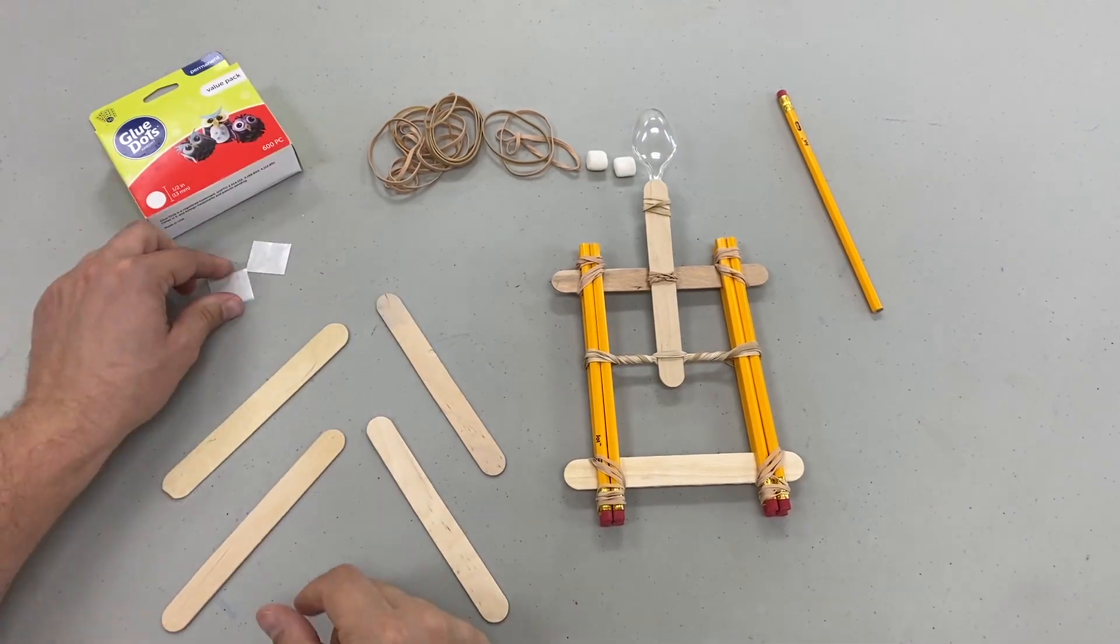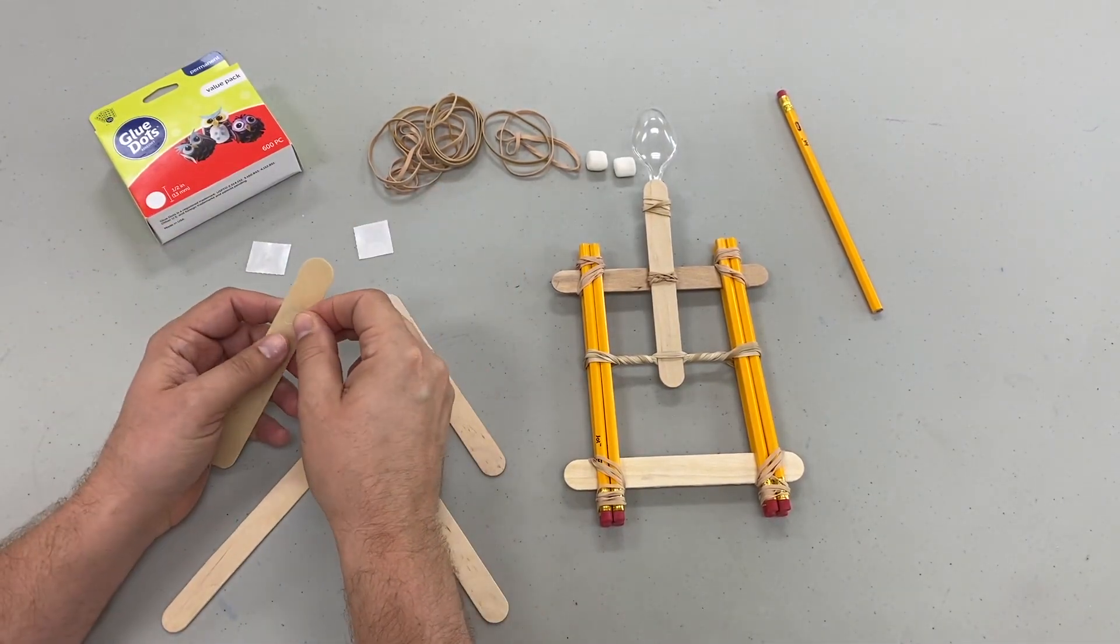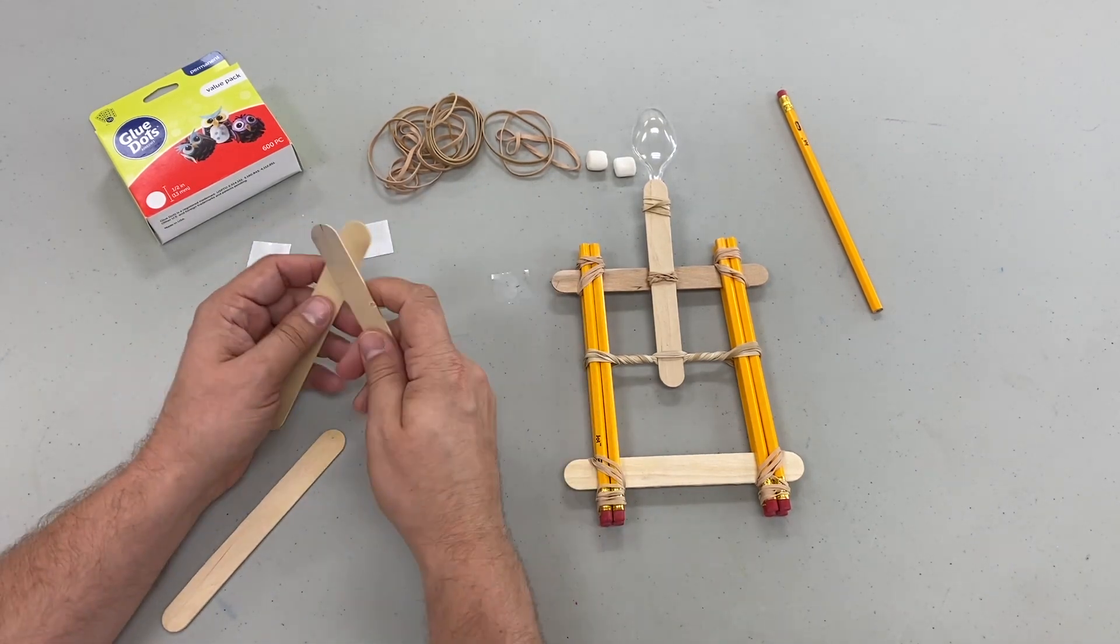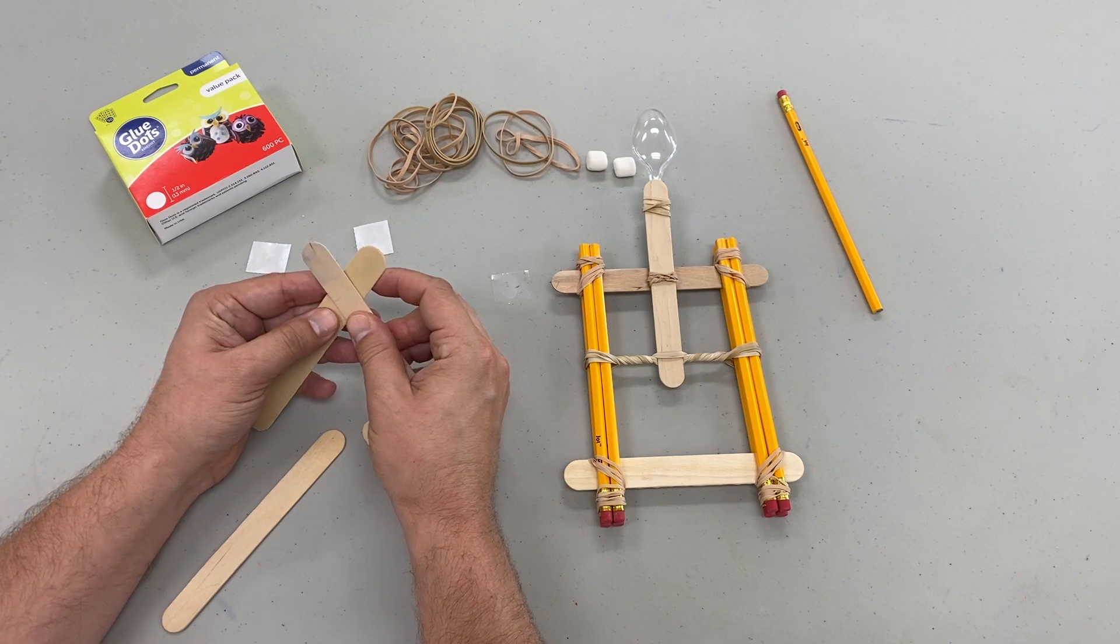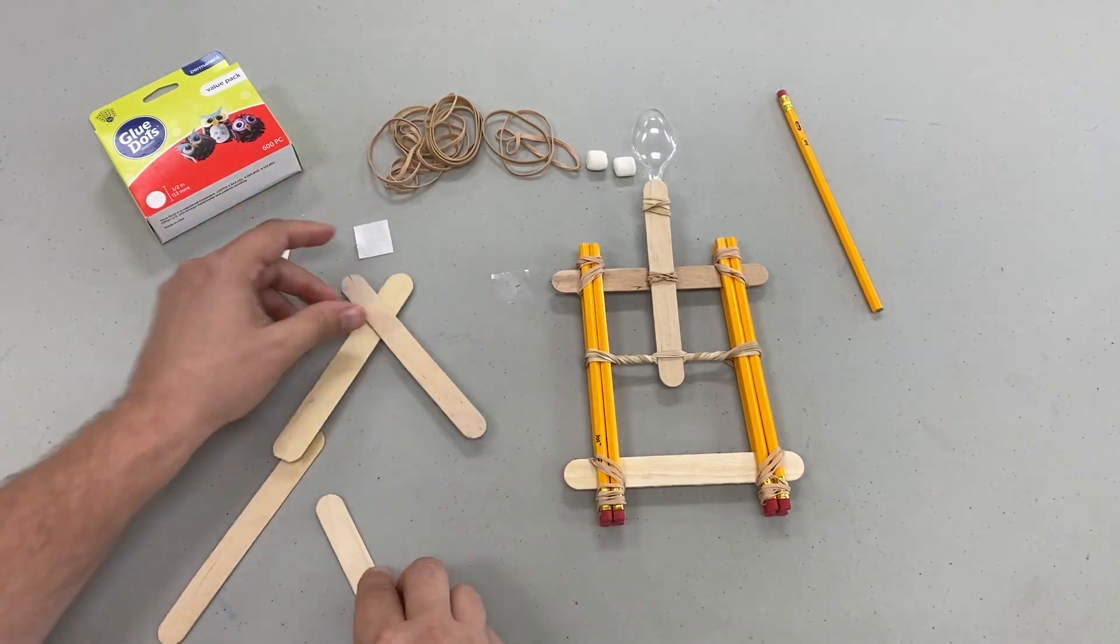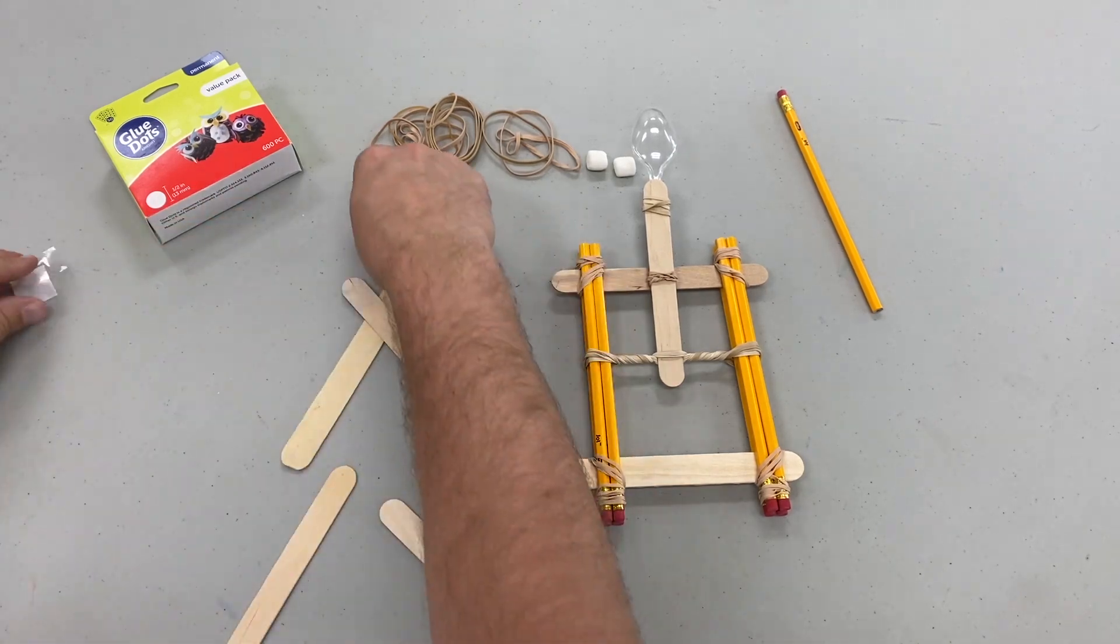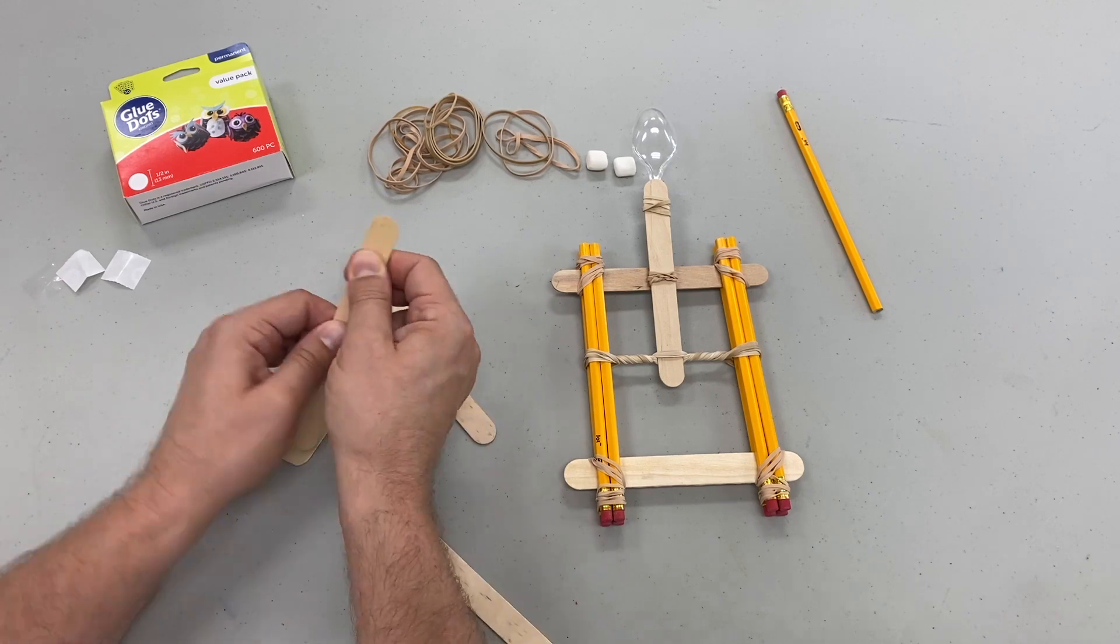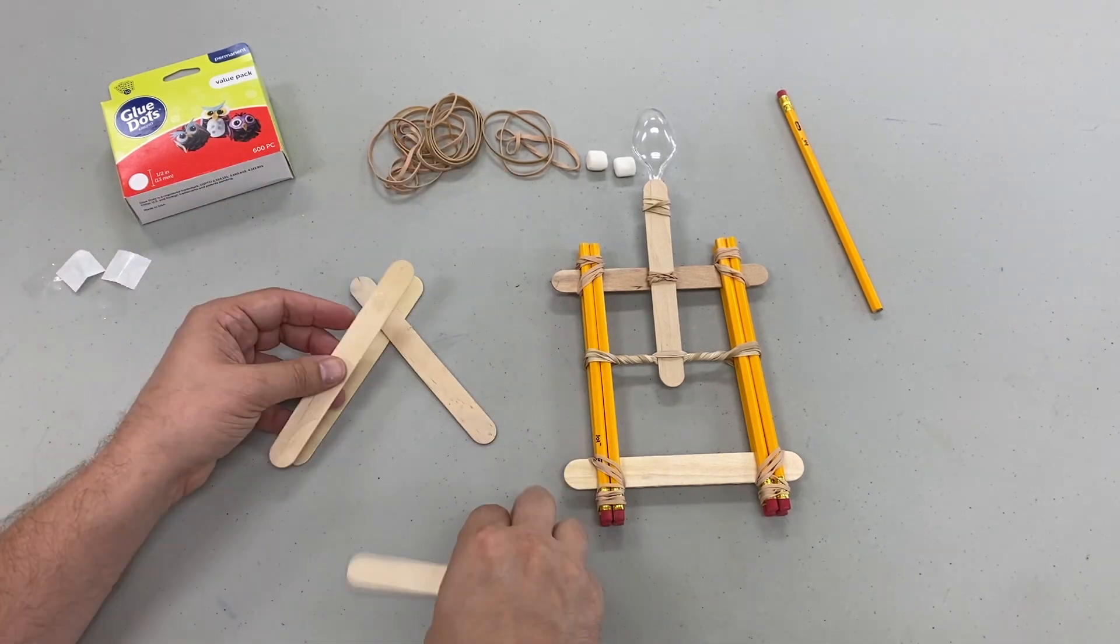Next we're going to take our glue dots. Now I love glue dots because it takes away the need for hot glue and it's great for elementary students so they don't burn themselves. We're going to make an A-frame, actually we're going to make two A-frames. Now I like to lay them on top of each other when I build my A-frames. This way I know that both pair are going to be of equal spacing.